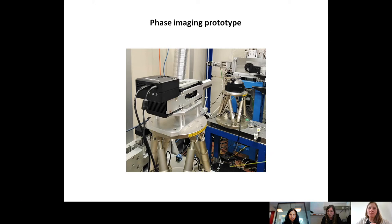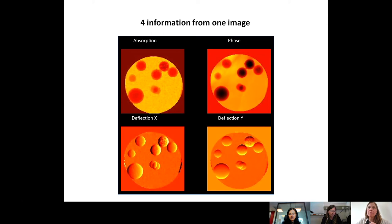Do you have any results you may share? Sure. At the synchrotron, we used microspheres of different chemical composition, and the phase imaging system was able to measure differences in refraction angles. So from one single acquisition, we were able to reconstruct the absorption, phase, and deflection maps in the two directions, X and Y. This is the first step to distinguish the chemical composition, so it was very impressive for us.